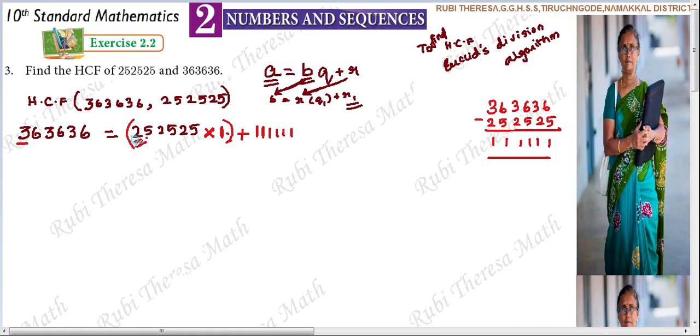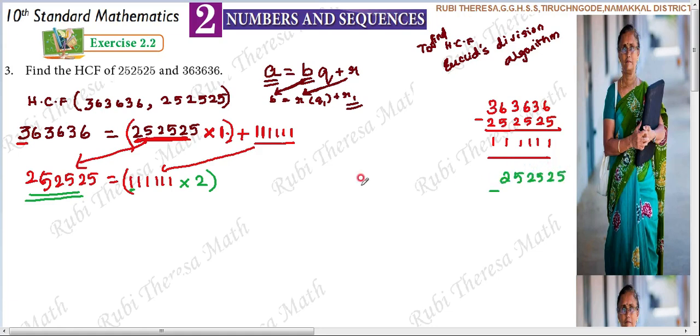In the next step, the divisor should become our dividend because the remainder will be less than the divisor. So 252,525 becomes the dividend, and the remainder 111,111 becomes the divisor. How many times? 2 lakh something—if we multiply by 2, we get 2,22,222. So the quotient is 2. 5 minus 2 is 3, 2 minus 2 is 0, 5 minus 2 is 3, 2 minus 2 is 0. The remainder is 30,303.